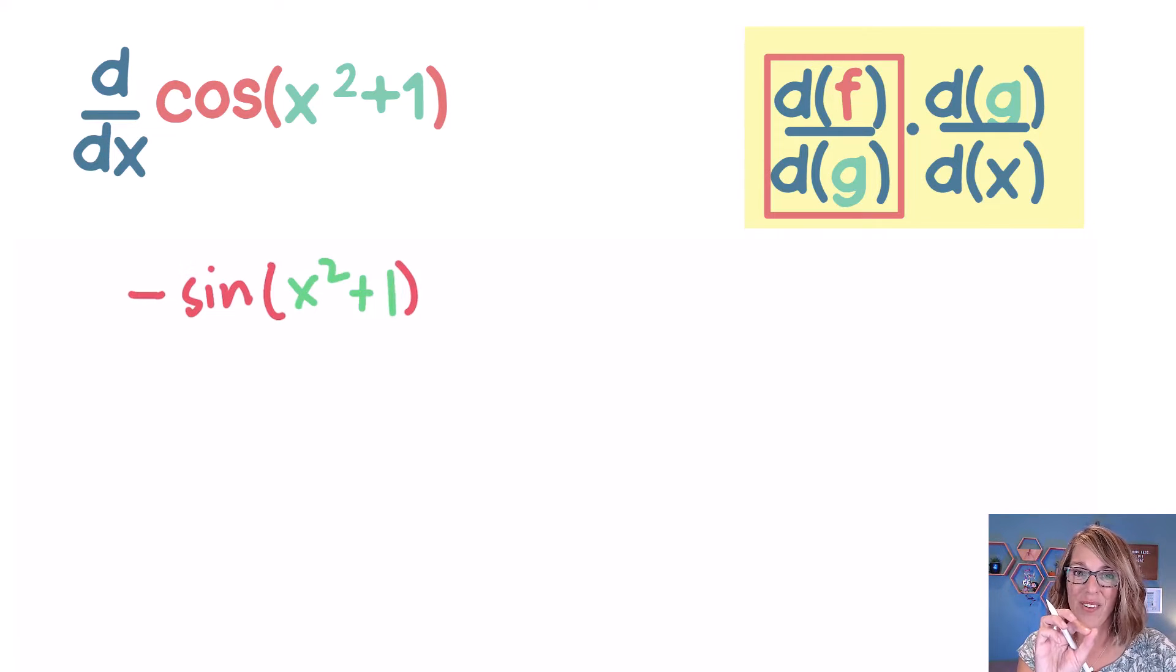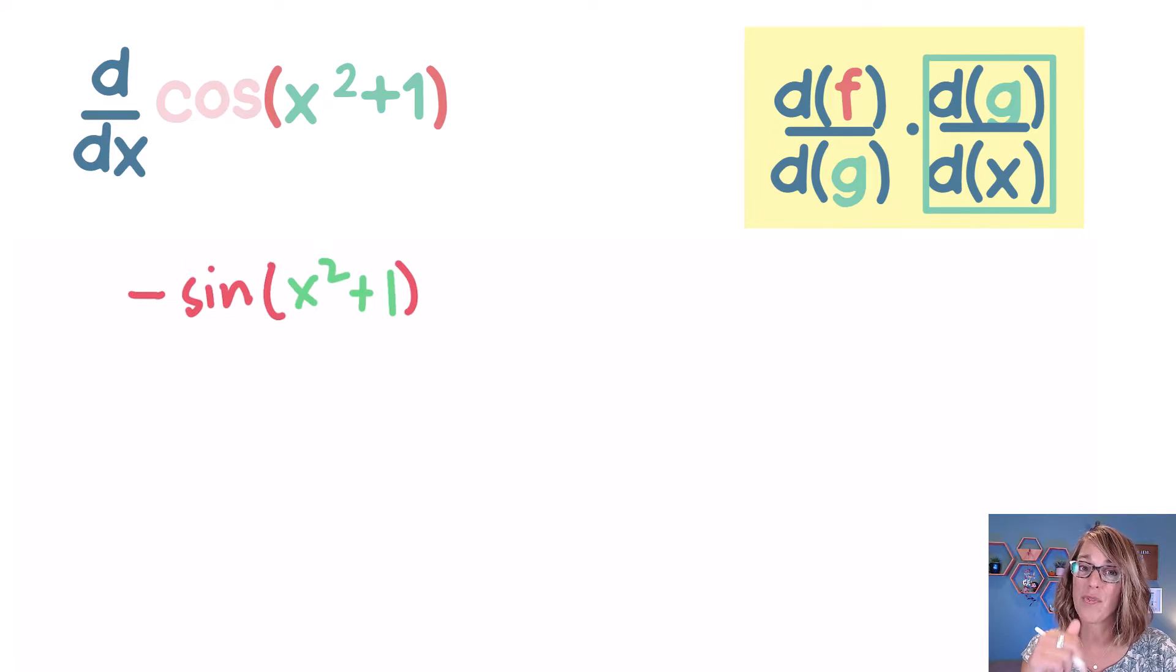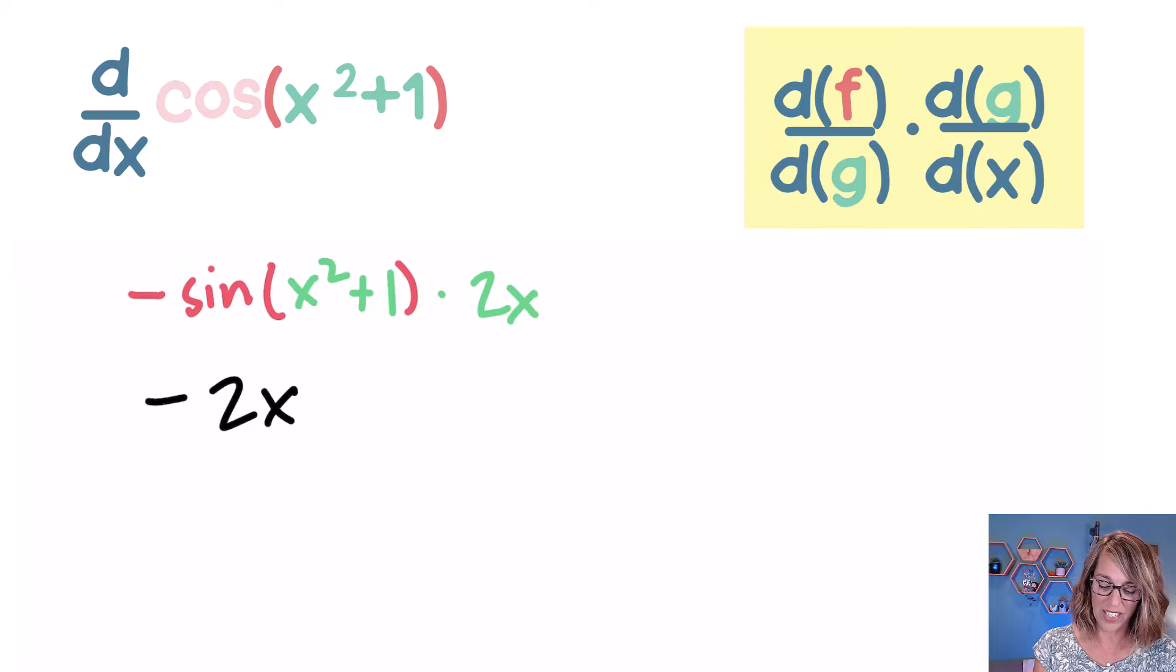Now I'm done with the cosine. I can even just cover it up and I'm ready to multiply this by the derivative of x squared plus 1. The derivative of x squared plus 1 is 2x and I can rearrange things just a little bit and I get negative 2x sine of x squared plus 1.